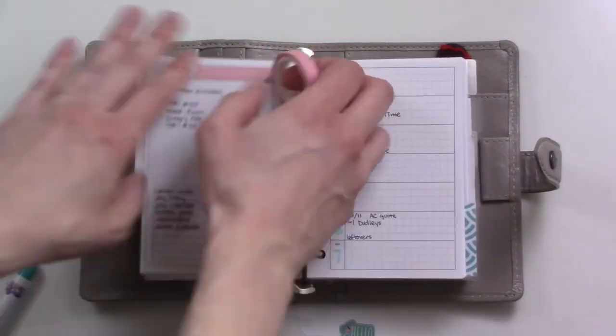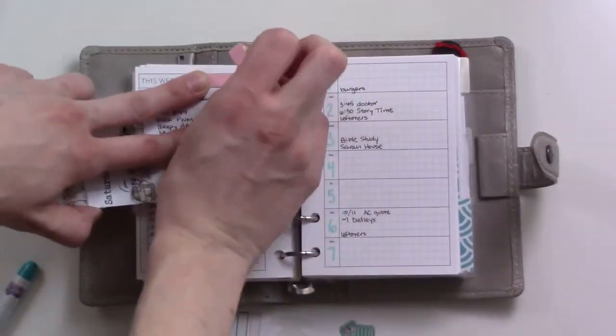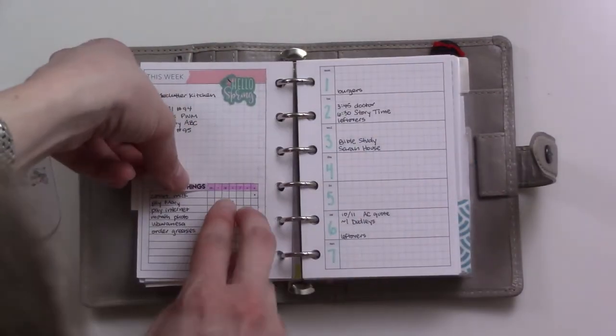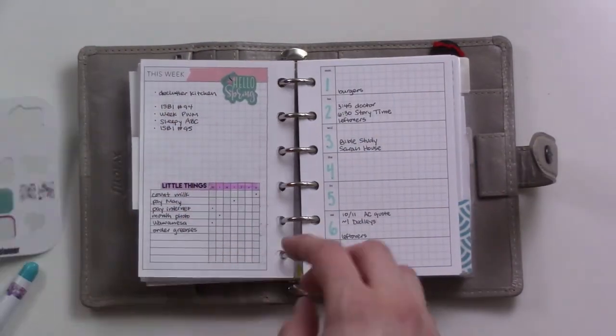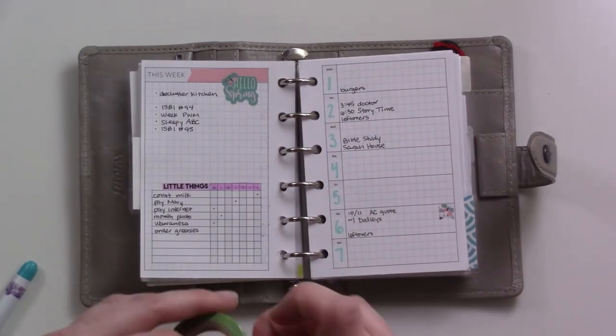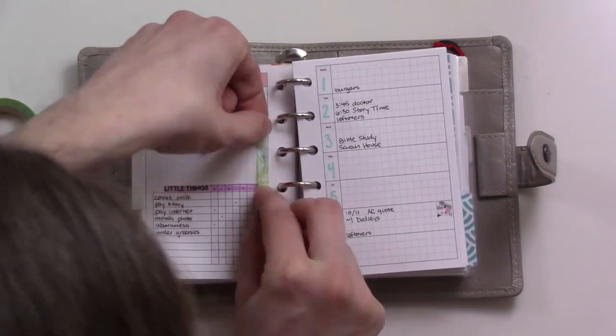Something that I kind of like about the format of this weekly spread is that it allows me a little bit more room to be a bit more creative decoratively. And then as usual, I save the washi tape from my weekly and carry it around with me and use that to set up my dailies throughout the week.